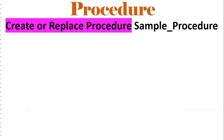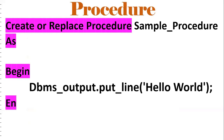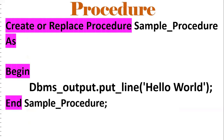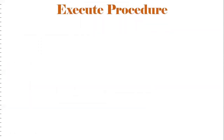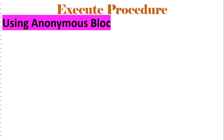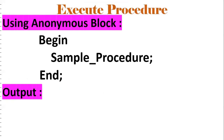Let us understand what a procedure is. This is a sample procedure: create or replace procedure, procedure name, as begin and end. DBMS output is used to see the result on the console — for example, 'Hello World'. Now we need to execute this procedure. If you want to execute this procedure, we use an anonymous block: begin, procedure name, end. That output will come as 'Hello World'.